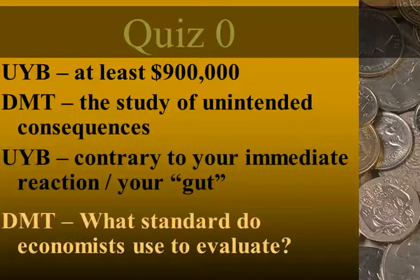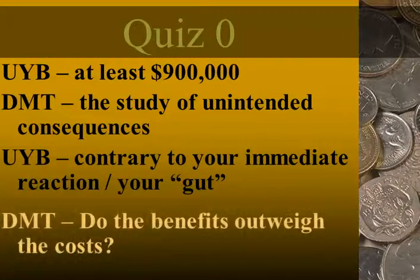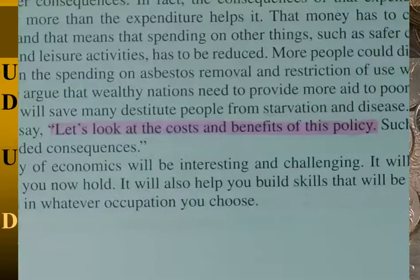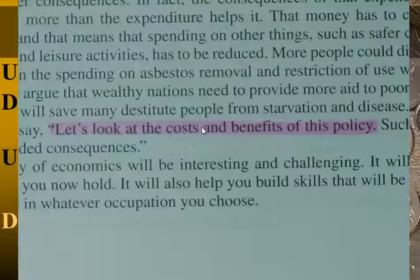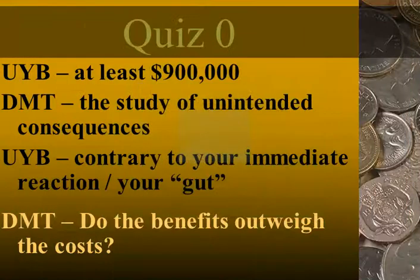Finally, what about that last 'don't miss this' question: 'what standard do economists use to evaluate?' The answer is: do the benefits outweigh the costs? Economists drive people crazy by always wanting to know the costs and benefits of something before giving advice. Even though it's highlighted here, in your book this answer was hiding in plain sight — no boldface, no italics, no outline point. But an educated reader notices 'that seems to sum up what economists say.' That's the standard they use. Can you answer questions and get answers like these?